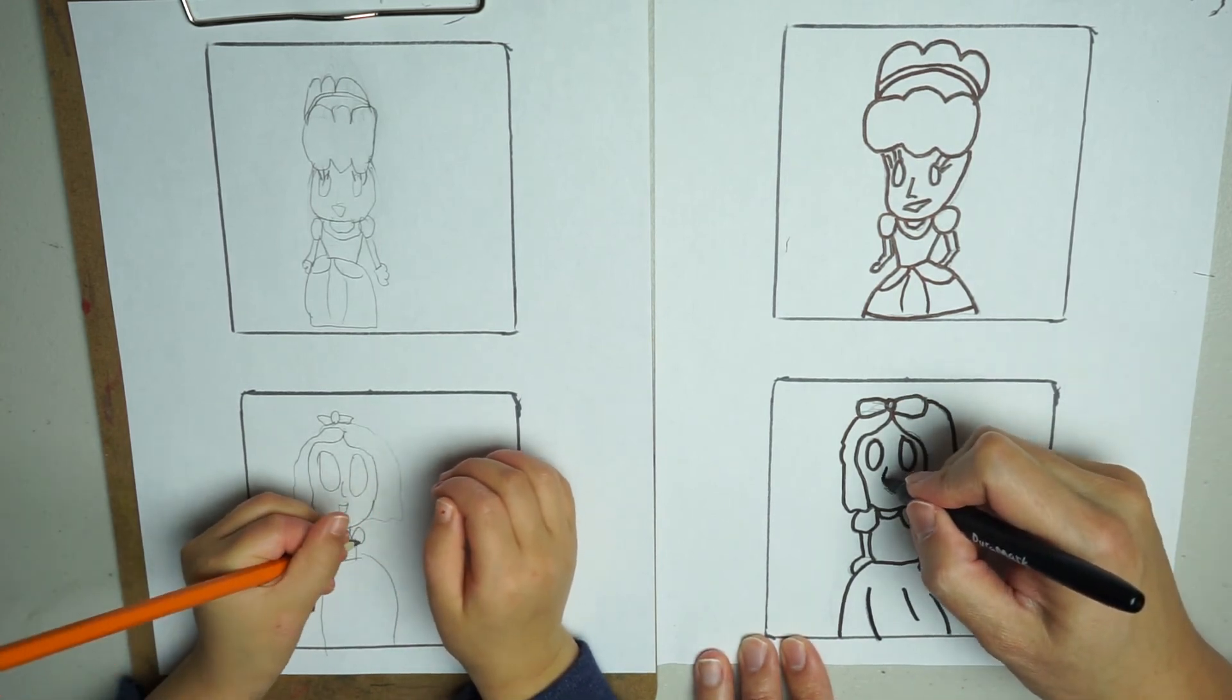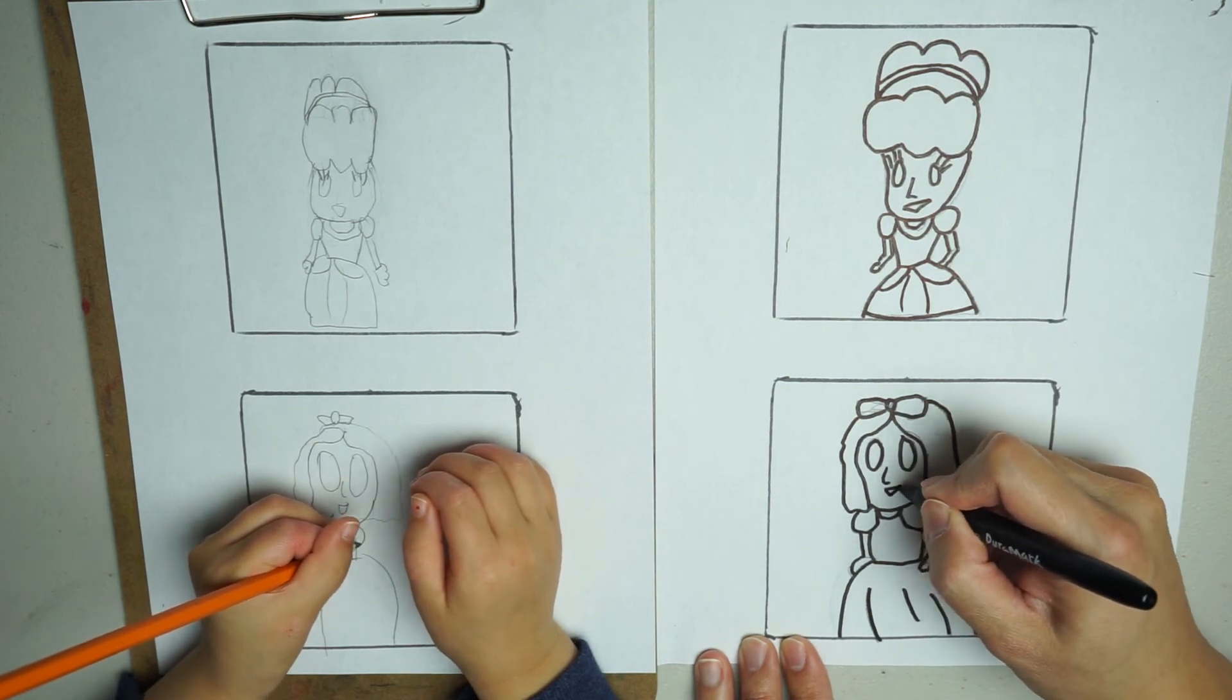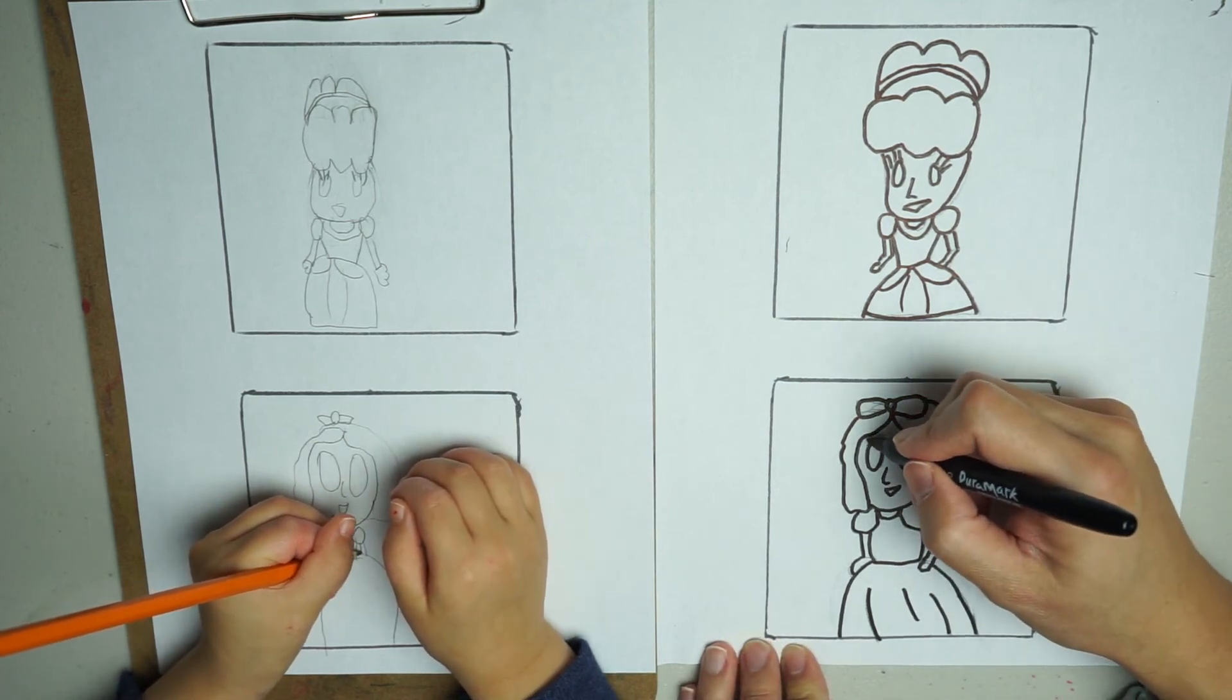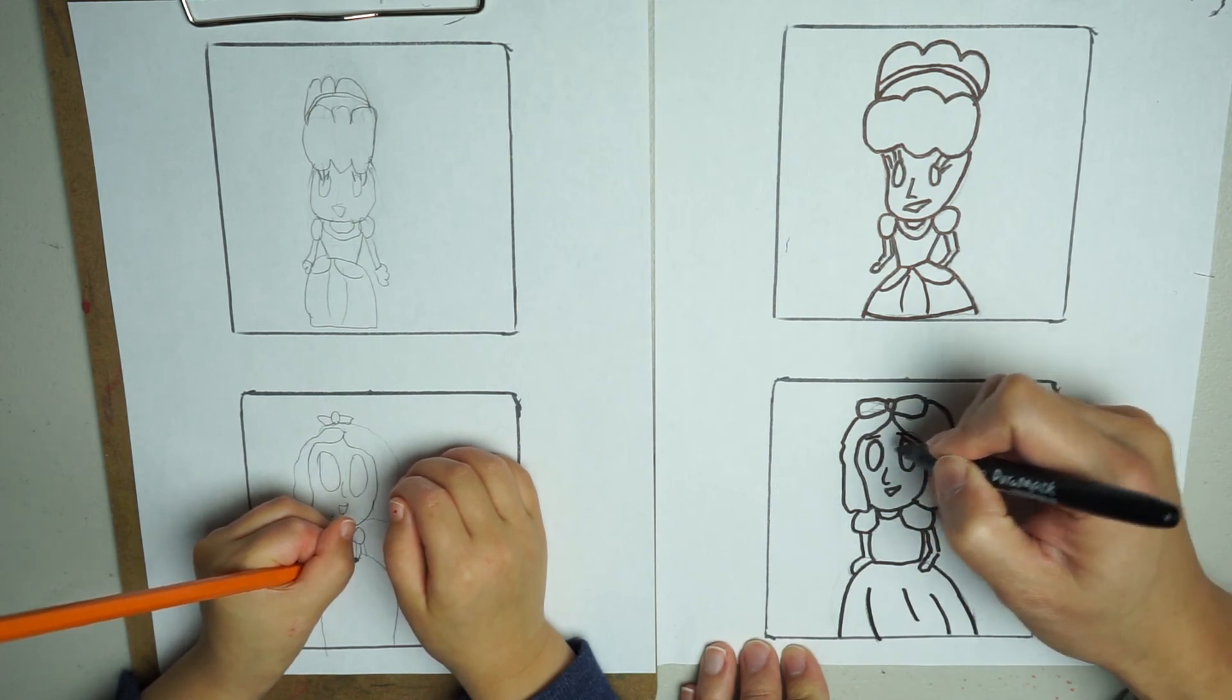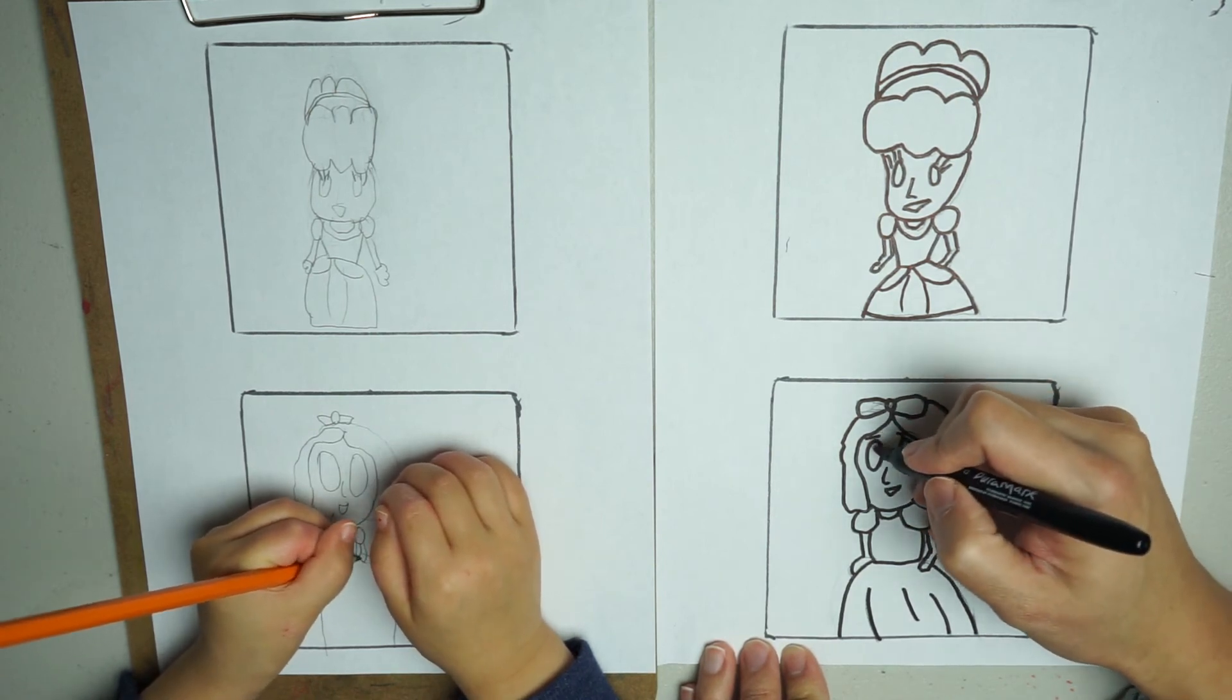You open her nose. One thing you're gonna add is her eyebrow. You're gonna make sure her eyes are black, okay?